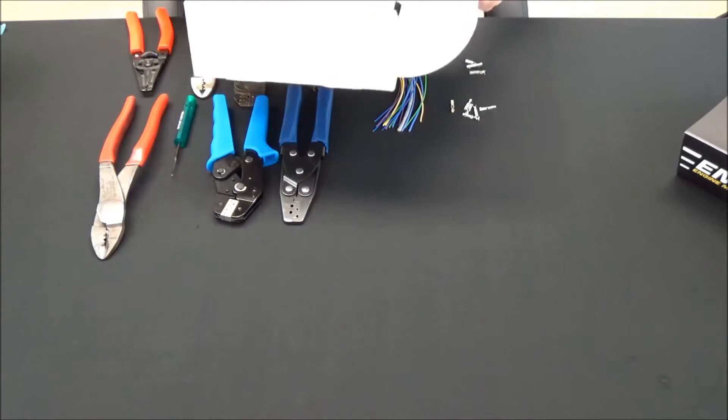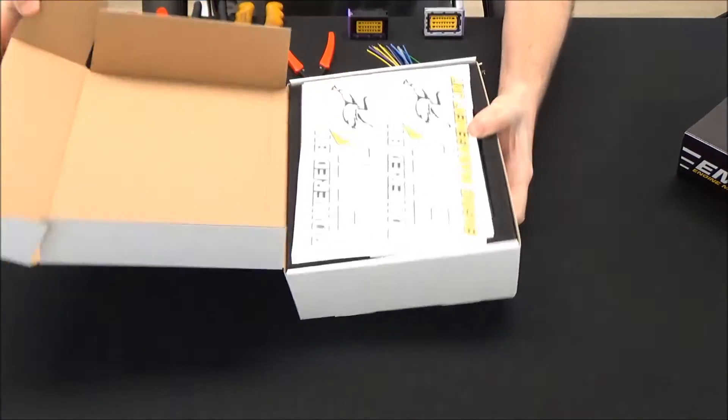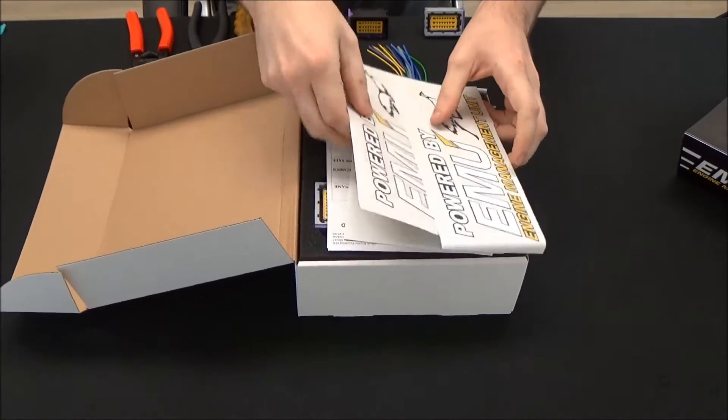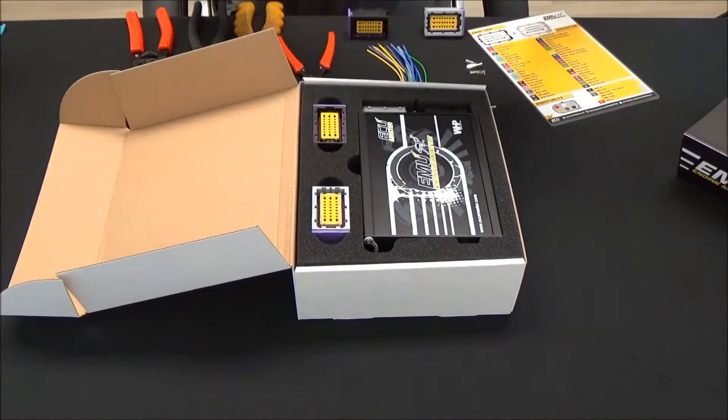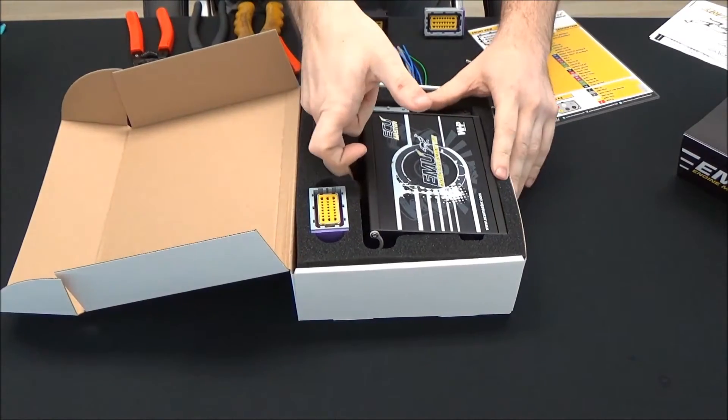Anyway, there's going to be some wiring involved. So I'll show you. Here's what the EMU looks like when it comes to the package. You've got some stickers, pin-out card, warranty card, and you've got the ECU itself.